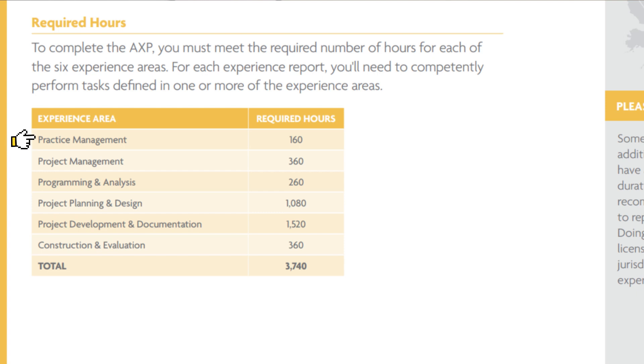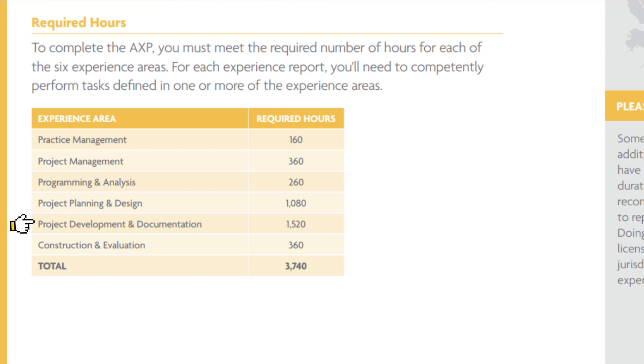The key experience areas are: Practice Management — 160 hours; Project Management — 360 hours; Program Analysis — 260 hours; Project Planning and Designing — 1,080 hours; Project Development and Documentation — 1,520 hours; and Construction and Evaluation — 360 hours. These accumulate to give you the required 3,740 hours, making it a very big journey to complete.